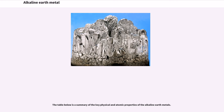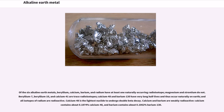The table below is a summary of the key physical and atomic properties of the alkaline earth metals. Of the six alkaline earth metals, beryllium, calcium, barium, and radium have at least one naturally occurring radioisotope; magnesium and strontium do not.